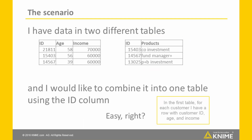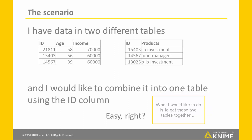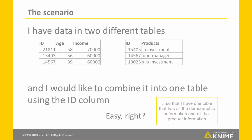In the first table, for each customer, I have a row with the customer ID, age, and income. In the second table, for each customer, I have a row with the customer ID and the product that was bought. What I would like to do is to get these two tables together so that I have one table that has all the demographic information and all the product information for each customer.